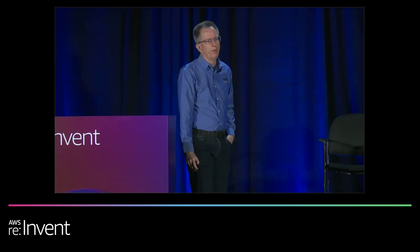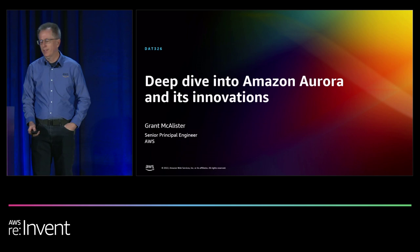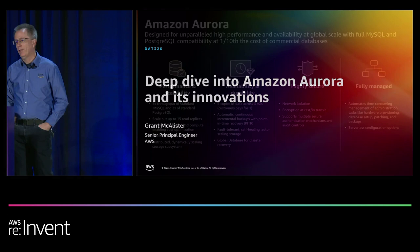My name is Grant McAllister. I'm a Senior Principal Engineer with AWS. Today we're going to be talking about Aurora. We're going to do a deep dive into some of the technology and architecture that we use, and we're going to talk about the innovations that architecture leads to and the things we've done over the last year.